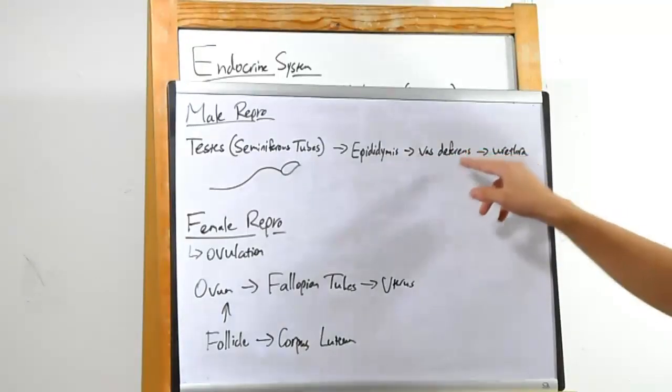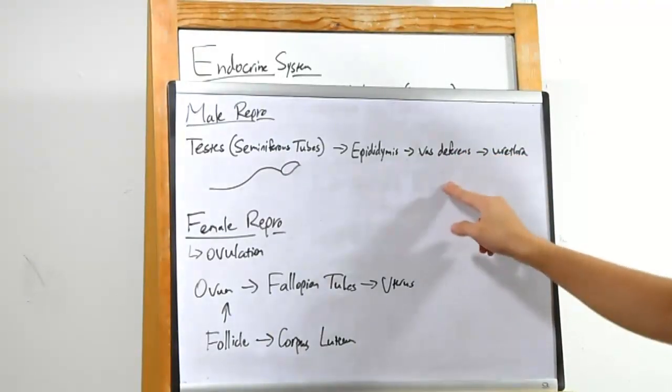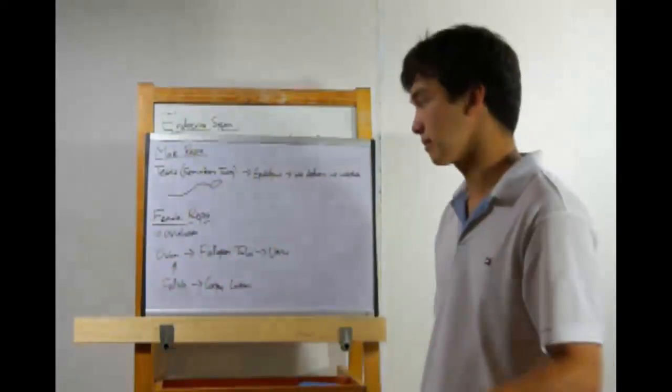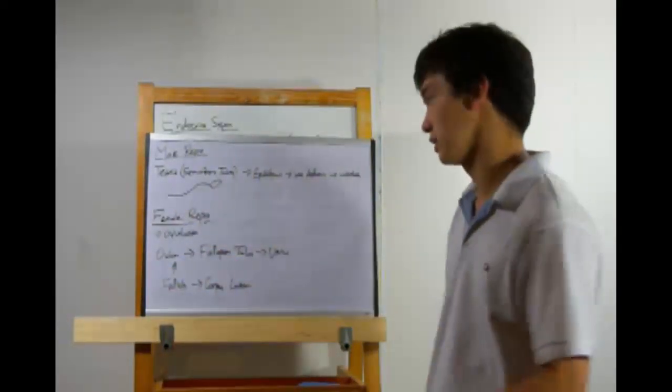All right, past the epididymis, the sperm will then go into the vas deferens, a tube leading ultimately to the urethra and the penis, therefore exiting the body. Okay, over to ovulation in the females.